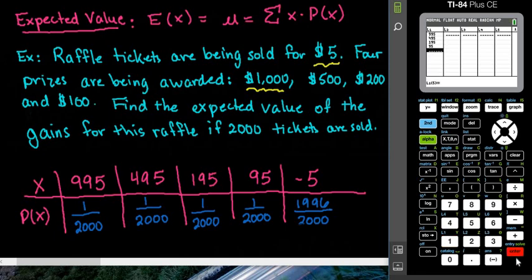Make sure that when you are putting in the negative 5, and just to make sure that you guys understand where the negative 5 came from, the negative 5 is because this represents all of the people that played the raffle but did not win a prize.